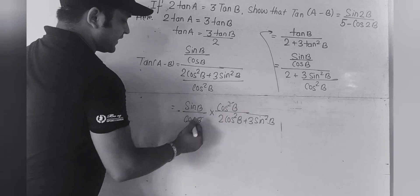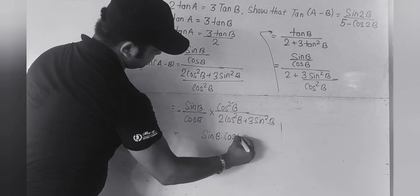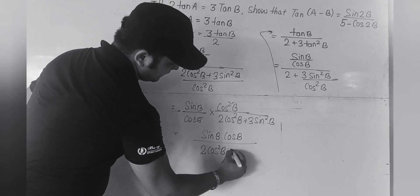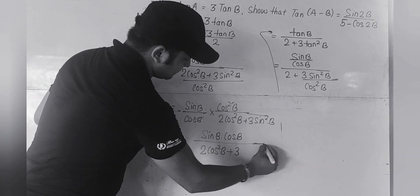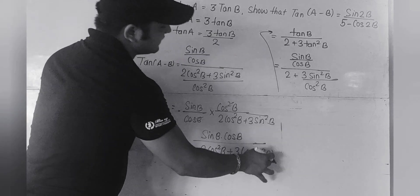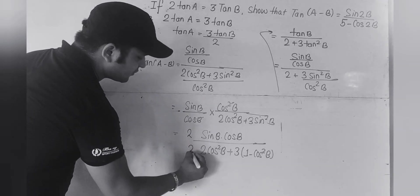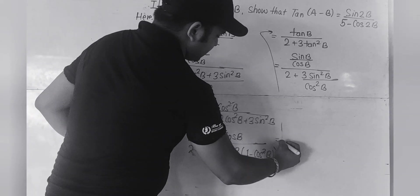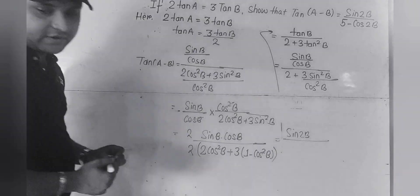So equals sinB/cosB × cos²B / (2cos²B + 3sin²B). The cos²B in numerator and denominator cancel. Now what we have is sinB·cosB / (2cos²B + 3sin²B). In place of sin²B, we can write 1 - cos²B. Now multiplying numerator and denominator by 2, we get 2sinBcosB, which by formula is sin2B.